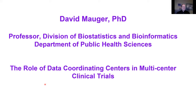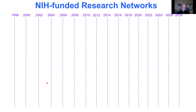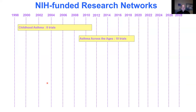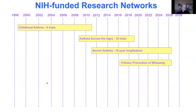My timeline goes back to 1995 here at Penn State. My first involvement in data coordinating centers was in the late 90s with respect to childhood asthma. I had something called the Childhood Asthma Research Network, which did eight clinical trials. That spawned another large research network that did 10 more trials starting in the late 2000s and going for close to 10 years. I then moved into a longitudinal study, which has been going for 10 years also in severe asthma.